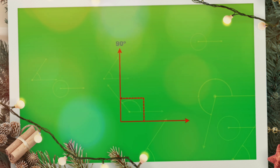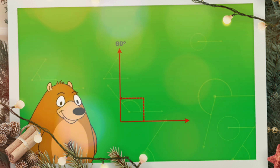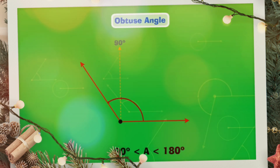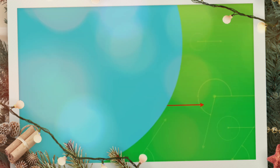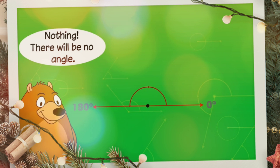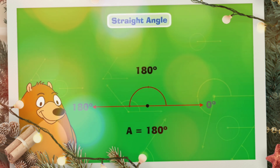If the angle is exactly 90 degrees, that is called a right angle. If the angle is greater than 90 degrees but less than 180 degrees, that is called an obtuse angle. If the angle is exactly 180 degrees, there is still an angle — that 180-degree angle is called a straight angle.